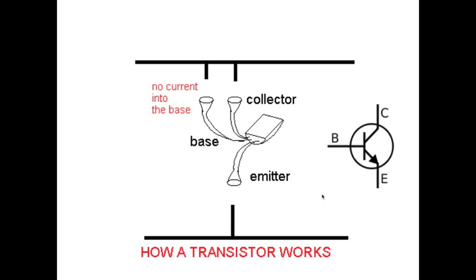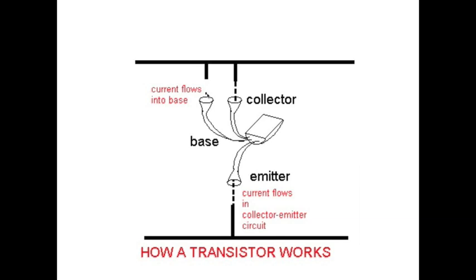Now here's a little diagram I got off the internet that kind of helps understand this a little bit as well. You have your collector, your base, and your emitter. Now if there's nothing flowing into the base, nothing can flow from the collector to the emitter. But if you have something flowing into the base, then whatever comes to the collector can go out to the emitter.